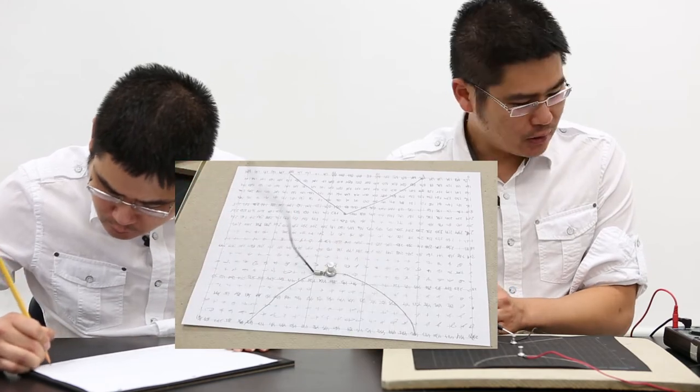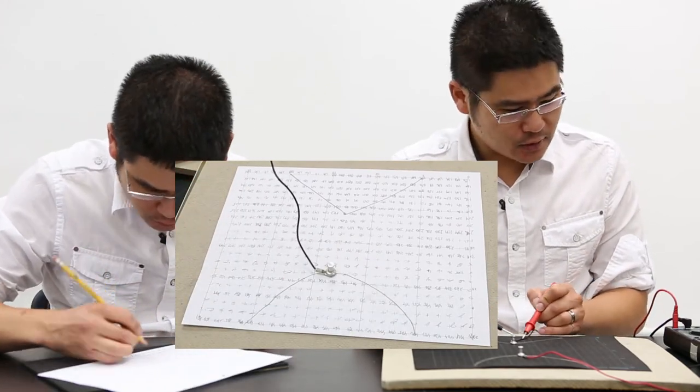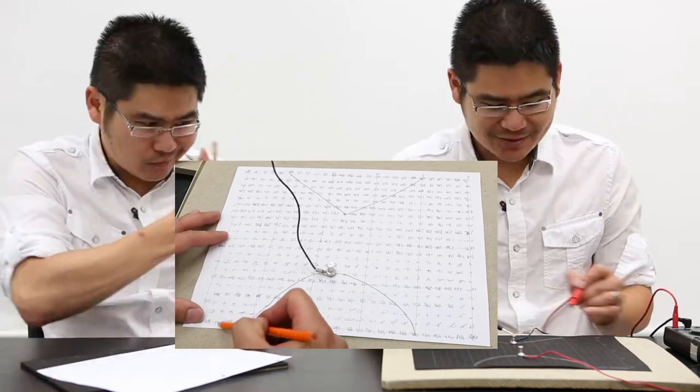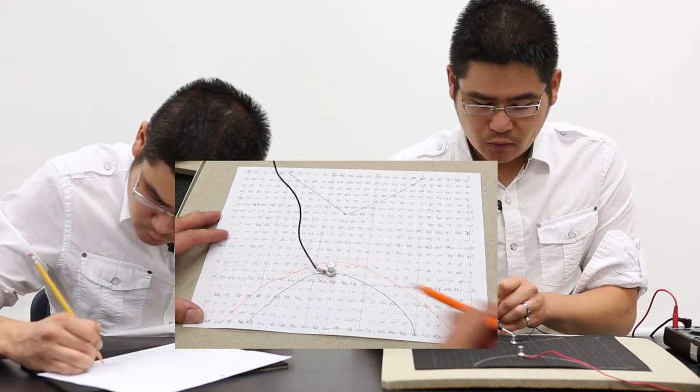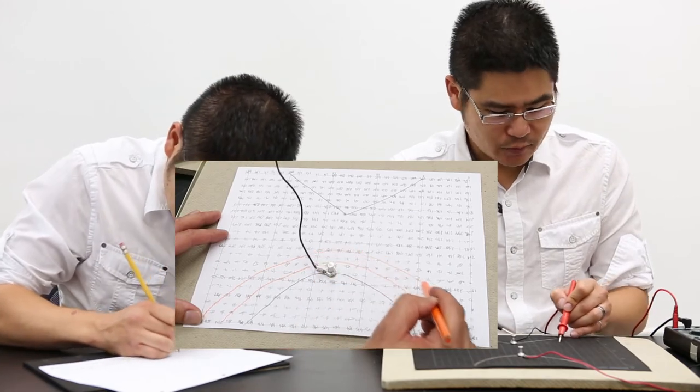So when you conduct this experiment, what you're essentially doing is finding regions where the voltages are roughly the same. And you'll have numbers marked down where the numbers are identical, and then you would link them all up together. These are known as your equal potential lines. So these are regions where the voltages are identical and they do not fluctuate.